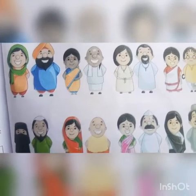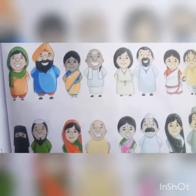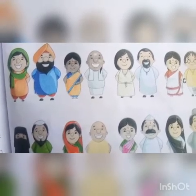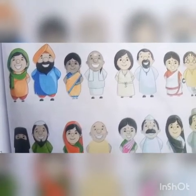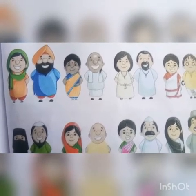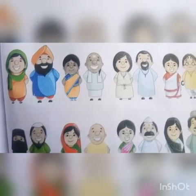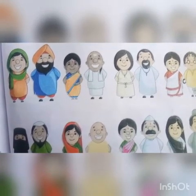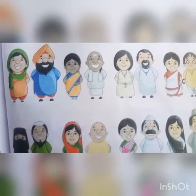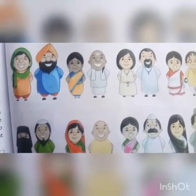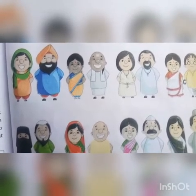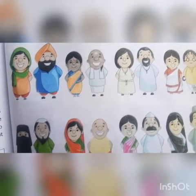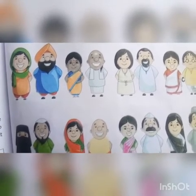Diversity in India. India is a home to a civilization that is 5,000 years old. Different groups of people from different parts of the world were attracted towards India over the years because of its wealth. Thus the Dravidians, Negroes, Aryans, Albanians, and Mongolites became part of the modern Indian race. We will now study the diversity in India under the following broad headings: landforms and lifestyle diversity, social diversity, religious diversity, linguistic diversity, and cultural diversity.